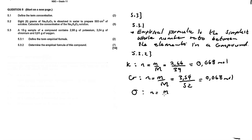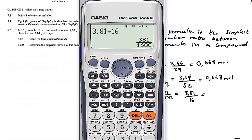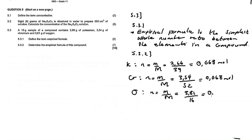For oxygen: number of moles equals mass over molar mass equals 3.81 divided by 16, which equals 0.238 moles.